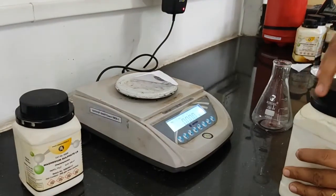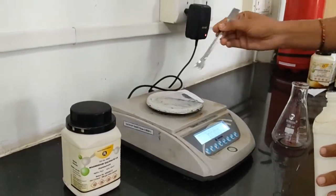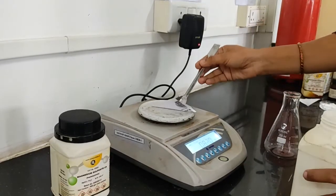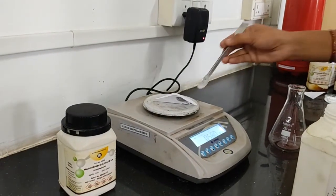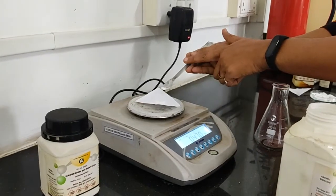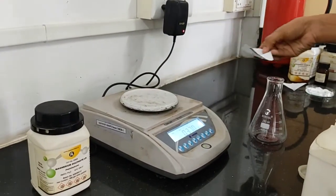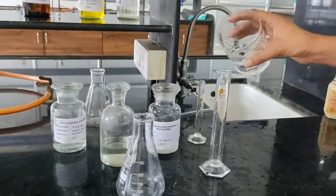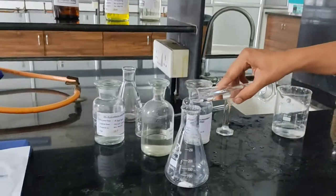Let's start with assay part. For that, we have to weigh accurately 0.5 grams of calcium gluconate. And transfer it into the conical flask.